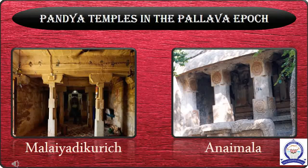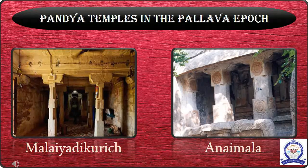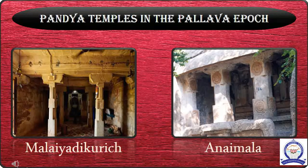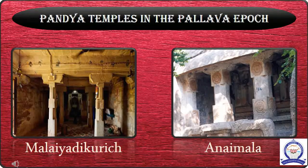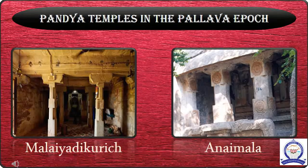Pandya temples in the Pallava approach: Early Pandyas were the contemporaries of the Pallavas. Unlike the Pallavas, Pandyas installed deities in the sanctum in the cave temples. More than 50 cave temples have been found in different parts of the Pandya Empire. The most important of them are found in Malayala Kuruchi, Anaimalai, Thiruparankundram and Trichirapalli. These caves were dedicated to Shiva, Vishnu and Brahma.